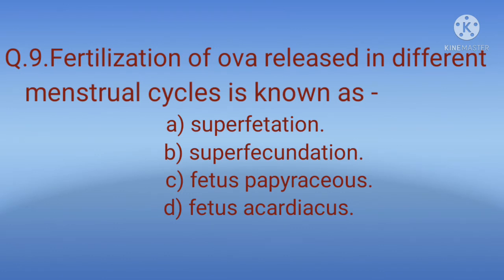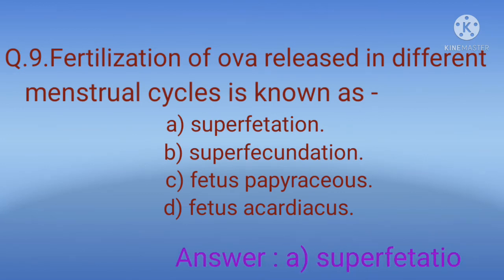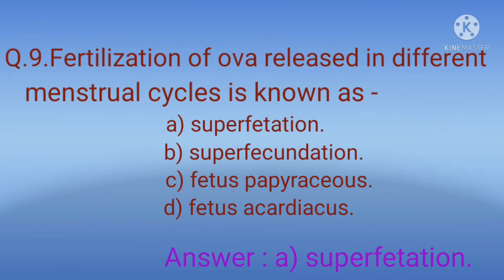Question 9: Fertilization of two ova released in different menstrual cycles is known as? Options: A) Superfetation, B) Superfecundation, C) Fetus papyraceus, D) Fetus acardiacus. The correct option is A, superfetation.